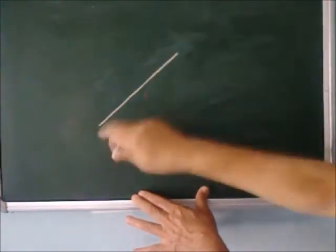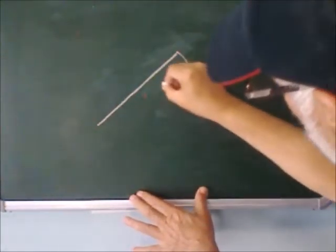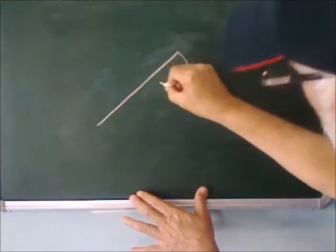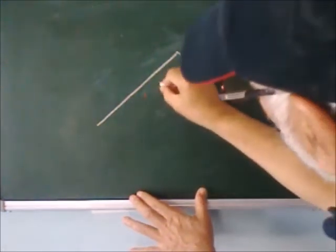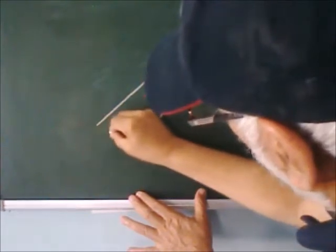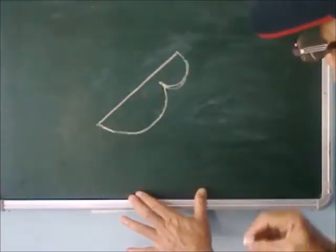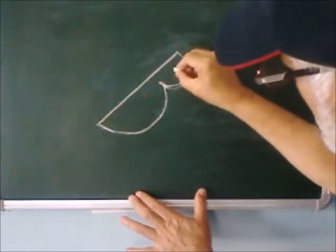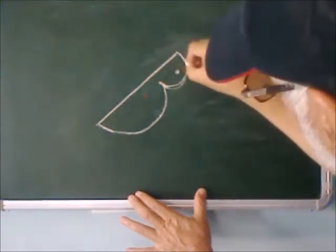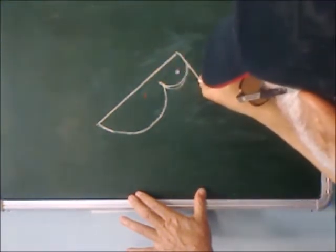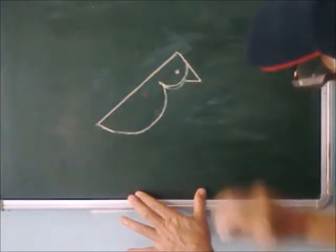Draw an oblique line. Draw a curve like this. And another, a bigger curve like this. Put a dot here.